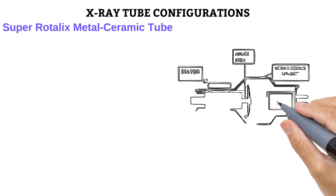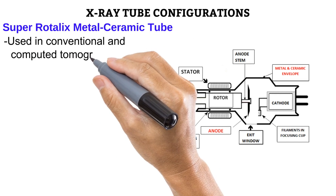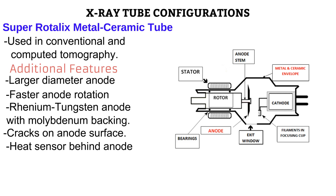Next up, the Super Rodolix Metal Ceramic Tube. This is also useful in equipment that operate on high tube loading and short exposure times, such as cine radiography, serial radiography, conventional tomography, and computed tomography equipment. It also has the same anode modifications as in the heavy-duty tubes.